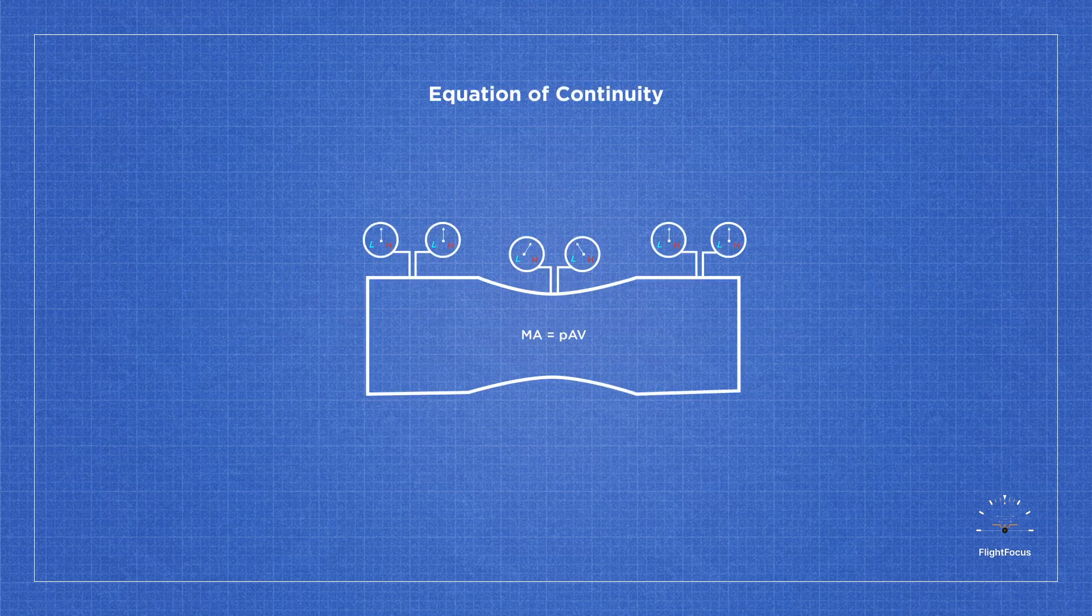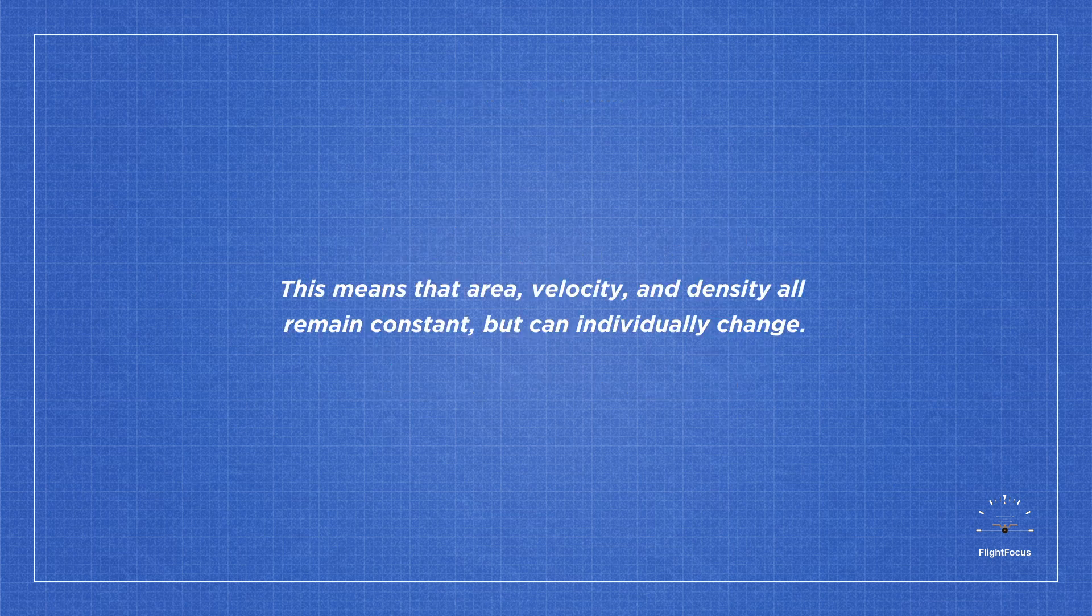The principle of continuity states that the velocity of a given mass of air entering a tube equals the mass of air exiting the tube. This means that area, velocity, and density all remain constant, but can individually change.